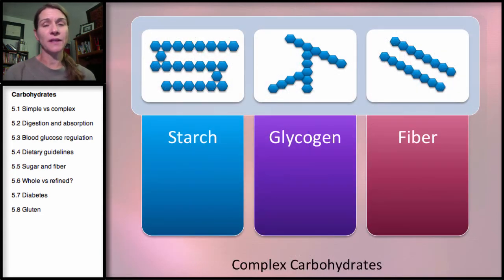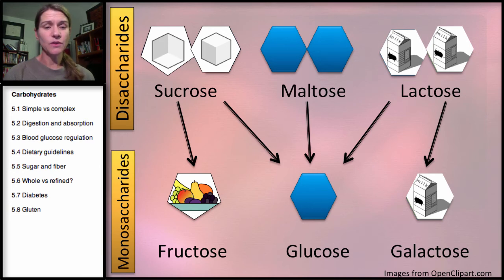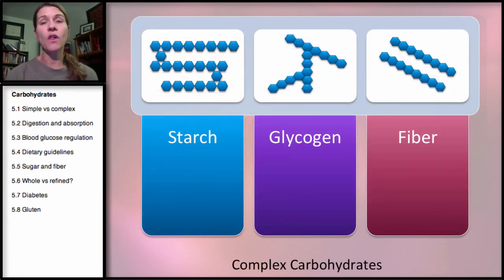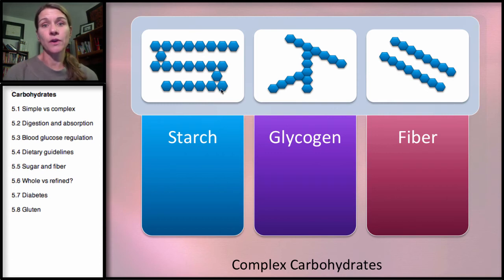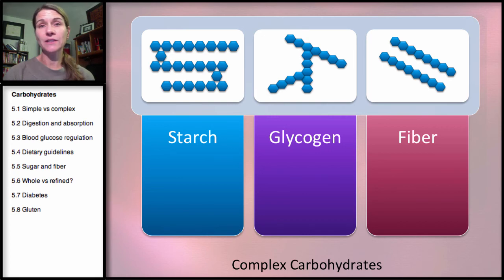What about the complex carbohydrates? The previous slide showed our simple carbohydrates — they were just one or two sugar units, which is very simple. This glucose unit is what makes up all of our complex carbohydrates: starch, the plant storage form of energy; glycogen, our storage form of glucose; and fiber. So these are our three complex carbohydrates.